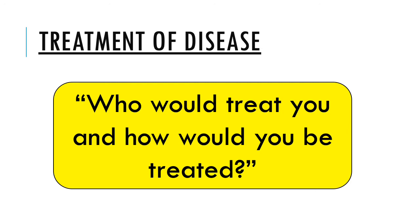The next section we're going to look at is the treatment of disease. Once we understand what people thought was making them ill, how did they go about treating illness? What types of treatment did they use, why did they use those treatments, and what types of people would treat you? We can think of lots of different people who would treat us today — for example the opticians, or your GP. So as we look through each time period, who would treat you and how would they go about treating you?